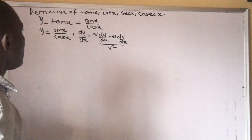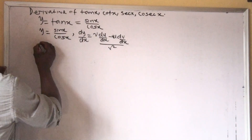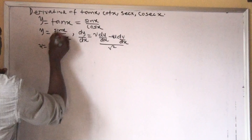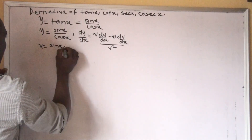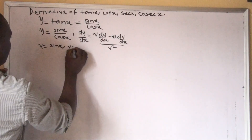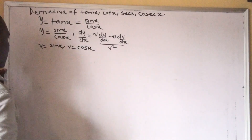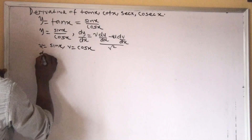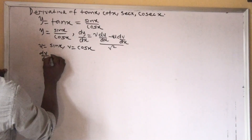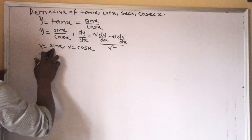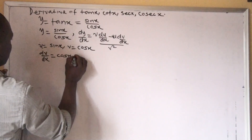Here, our u is the numerator — our u is sin x, and our v is the denominator, which is cos x. So our du/dx: if we differentiate sine, it is going to give us cos x.